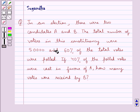The total number of voters in this constituency were 50,000 and 60% of the total votes were polled. If 40% of the polled votes were cast in favour of A, how many votes were received by B?